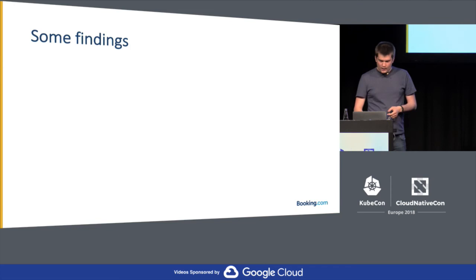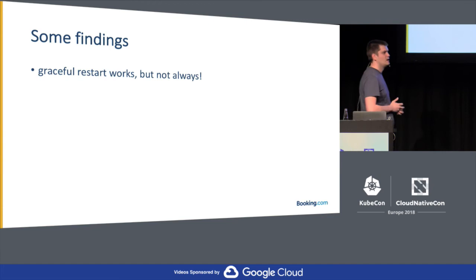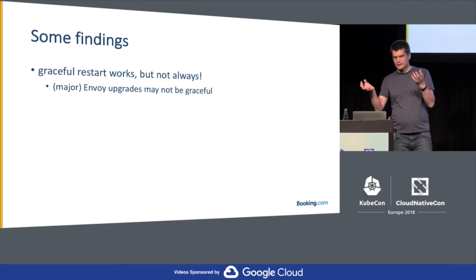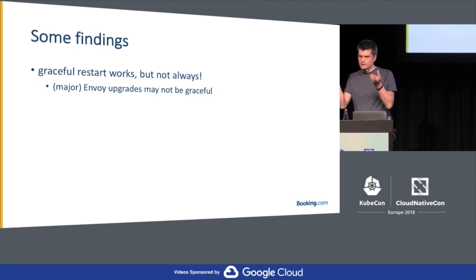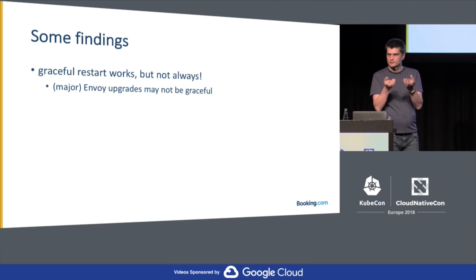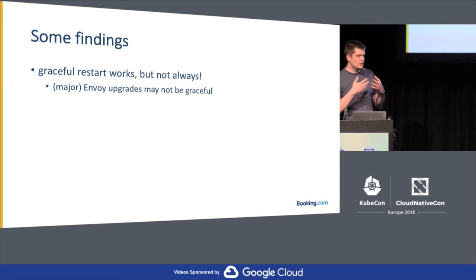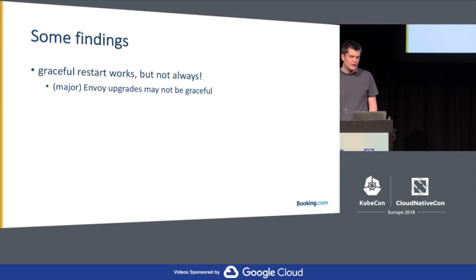Now for some specific findings. Quite funny: we favored Envoy over Linkerd because of its ability to do graceful restarts — but what we actually found is that graceful restart works, but not always. The moment where it doesn't work is when Envoy gets major upgrades. The way Envoy does a graceful restart is it spawns two instances, and those two instances negotiate with each other over a Unix socket protocol about who is the current leader. When this protocol changes during major upgrades, the graceful handover is not possible — this is where Envoy breaks. We faced this upgrading from 1.4 to 1.5. In 99% of cases where we need to restart Envoy, it never drops connections — but during major upgrades, it does.